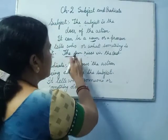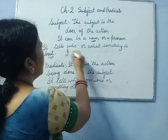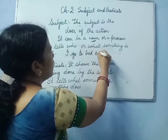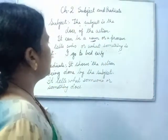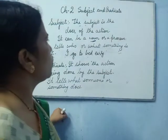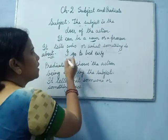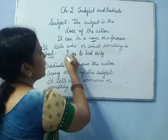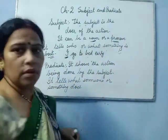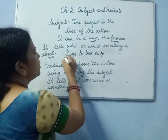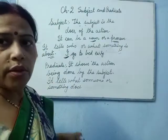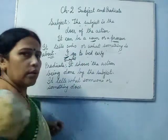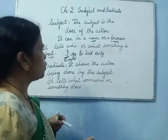Now consider: 'I go to bed early.' In this sentence, the doer is 'I.' I am doing the action, and 'I' is a pronoun. About whom are we talking? We are talking about 'I.' So 'I' is the subject.